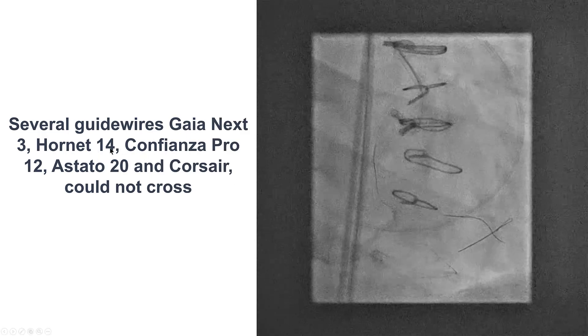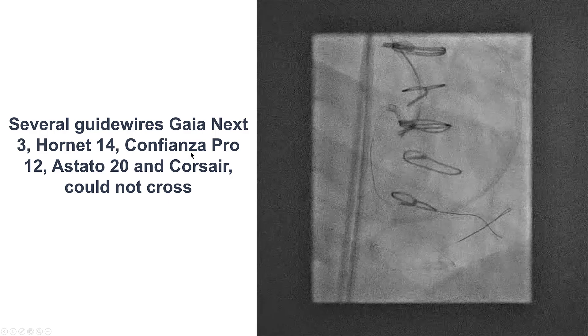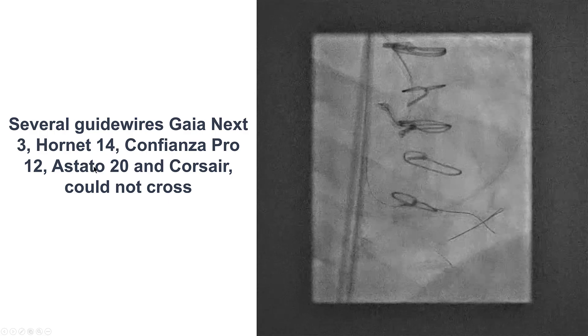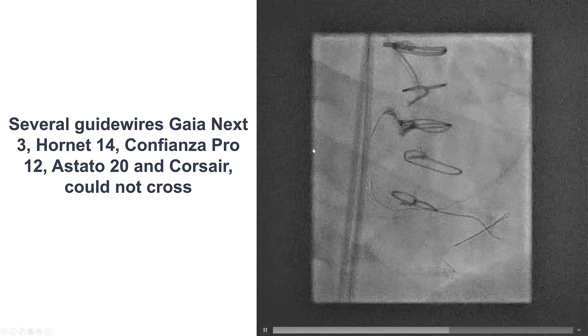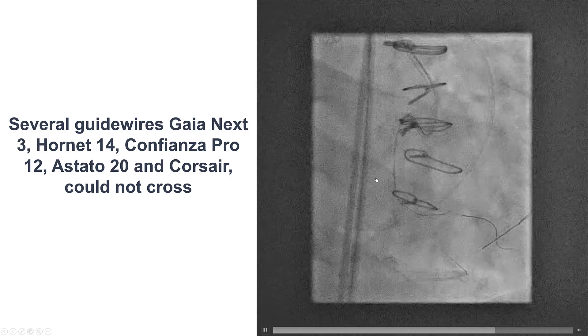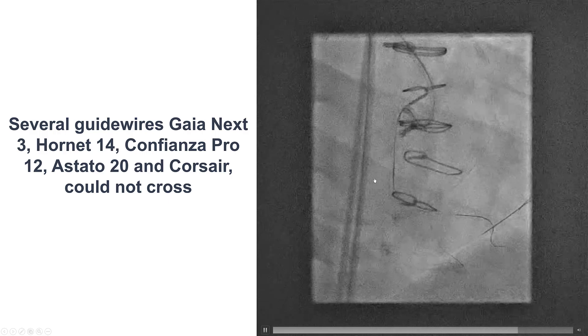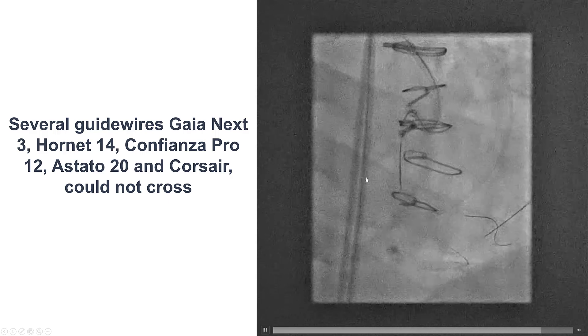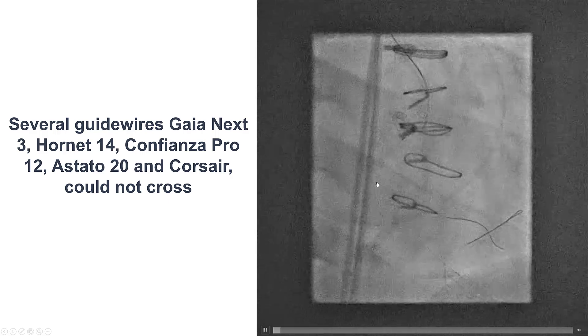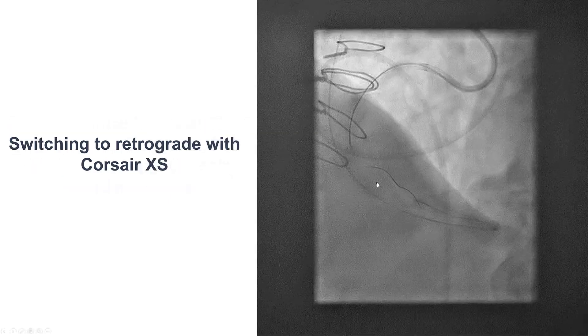We then used the Gaia NEX3, a Hornet 14, Confianza Pro 12, a Stato 20, and exchanged for a Corsair microcatheter. But once again, we were unable to cross through the proximal cap.